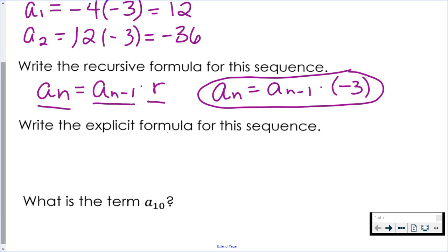For the explicit formula, you need the first term and the common ratio. Now there are actually two different explicit formulas, depending on whether you use term one or term zero. If you use term one, this is your explicit formula. We found term one in the first part of the question. We found that it was 12, and we know our ratio is negative three. So that's one version of our explicit formula.